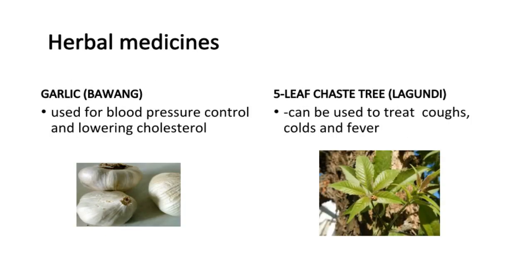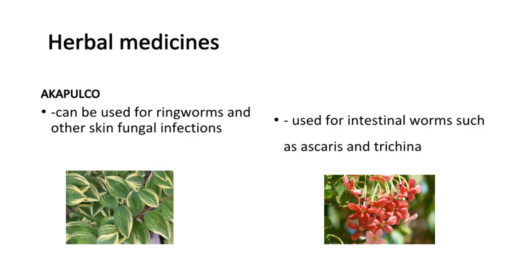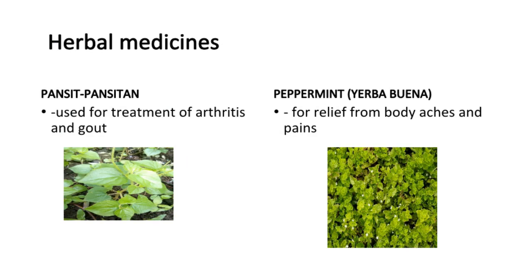The 10 DOH-approved herbal plants include: Garlic (Bawang) — for blood pressure control and lowering cholesterol; Five-leaf chaste tree (Lagundi) — for coughs, colds, and fever; Bitter gourd (Ampalaya) — as a supplement for non-insulin-dependent diabetic patients; Guava leaves — antiseptic for wounds or mouthwash for tooth decay and gum infection; Acapulco — for ringworms and other skin fungal infections; Chinese honeysuckle (Niyog-niyogan) — for intestinal worms such as Ascaris; Sambong — for urinary or kidney stones; Wild tea (Tsaang-gubat) — as mouthwash and for skin allergies; Pansit-pansitan — for arthritis and gout; and Peppermint (Yerba Buena) — for relief from body aches and pains.